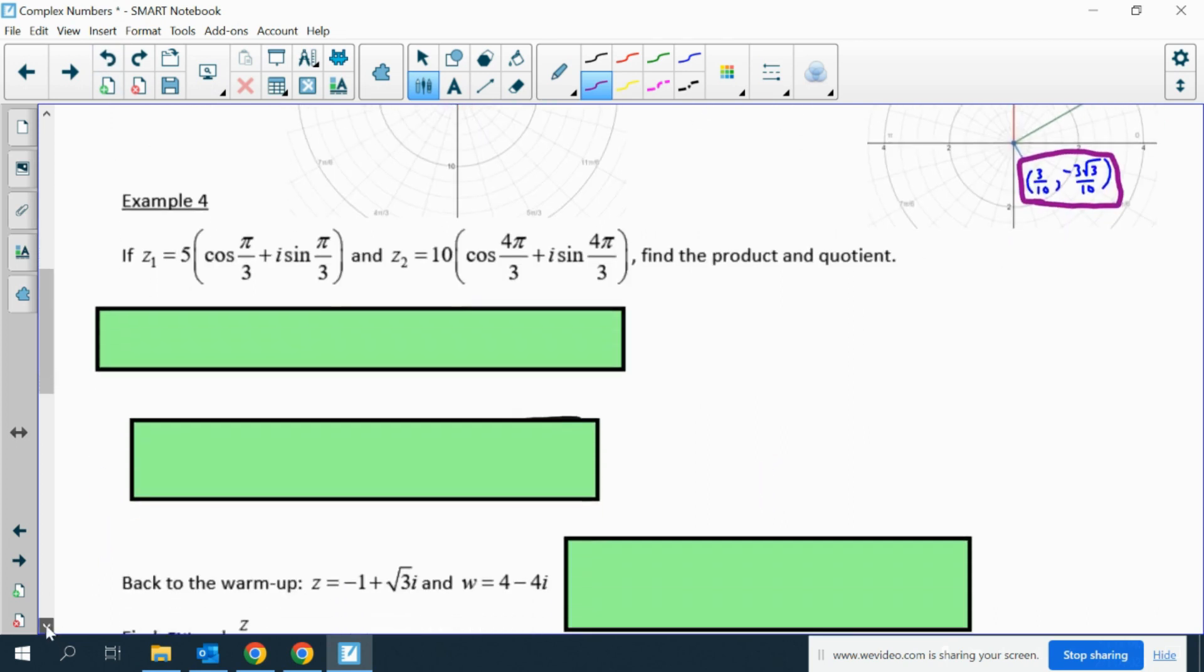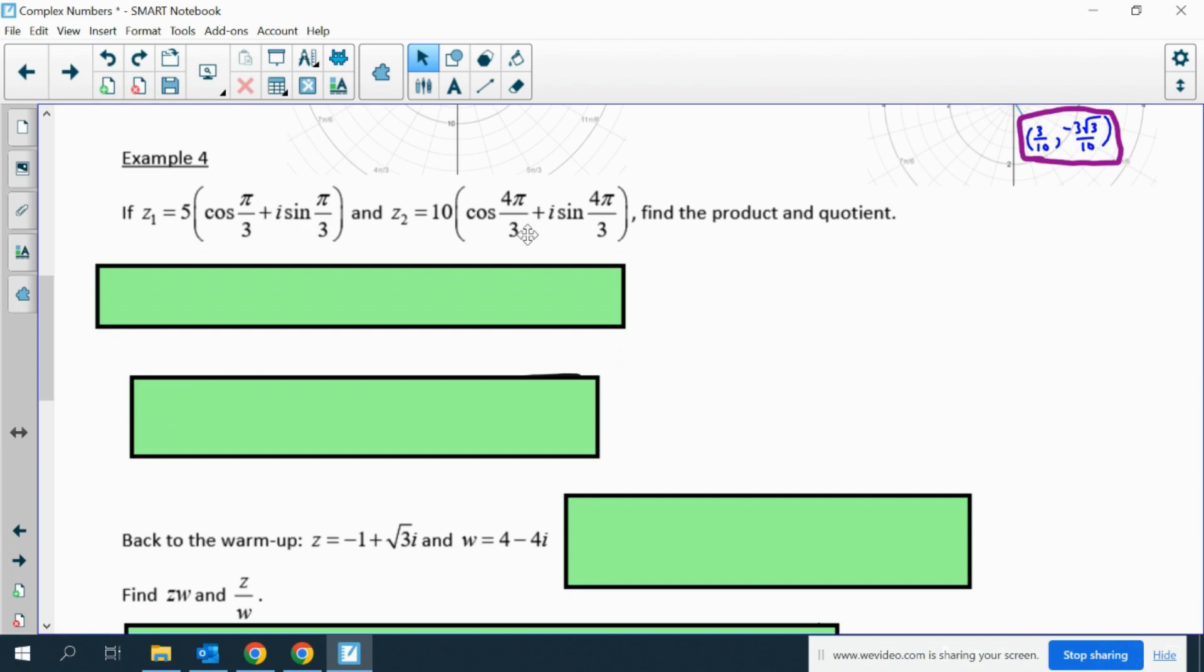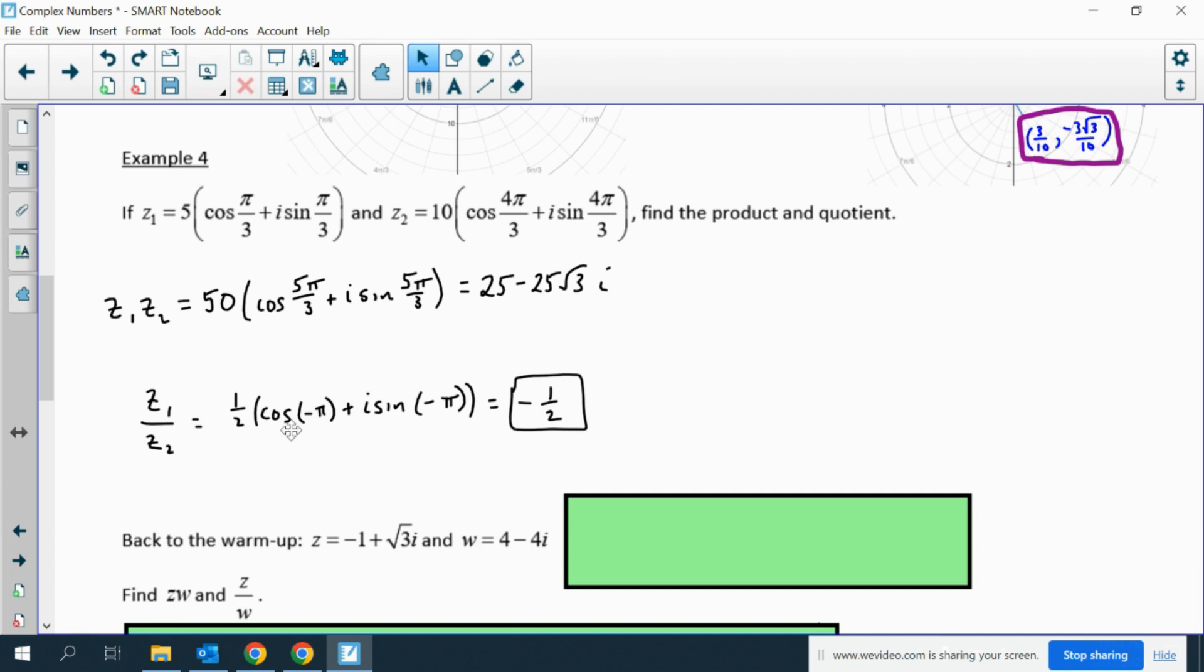Example 4: Now we're going to do a couple in radian form. If I add these angles and multiply, I get z1 times z2 is 50, and then cosine of 5 pi thirds and i sine 5 pi thirds, and then I rewrote it in its regular complex form. If I divide, 5 divided by 10 is 1 half, then subtract the angles, you get negative pi. So then you can just rewrite this in regular complex form, which is negative 1 half. How do I know that? Because cosine of pi is negative 1, and sine of pi or negative pi is 0, and as a result, that means the imaginary part goes away.